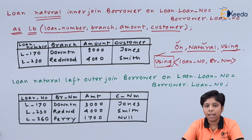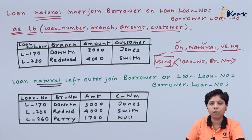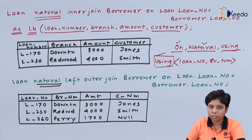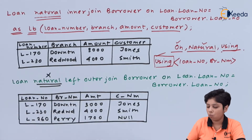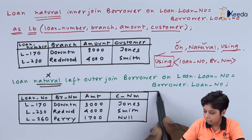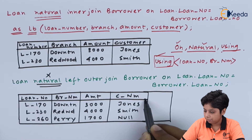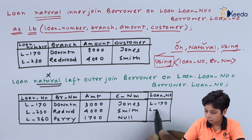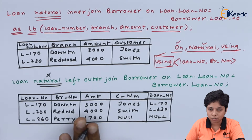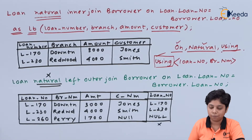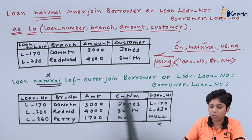If we use natural left outer join without the NATURAL keyword, we would have an additional loan_number field from the borrower table, which would be null for non-matching rows. Since we are using NATURAL, this duplicate field is eliminated. The table result stands with only the merged loan_number field.